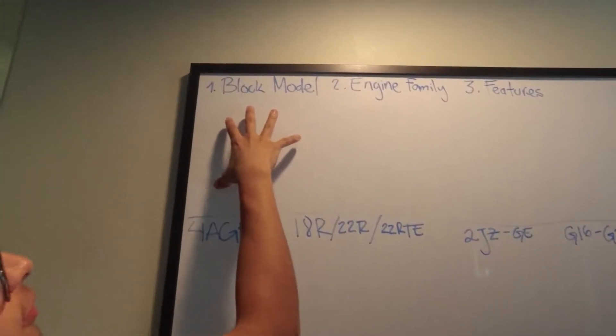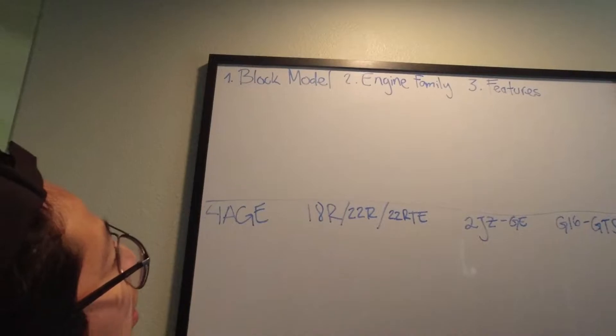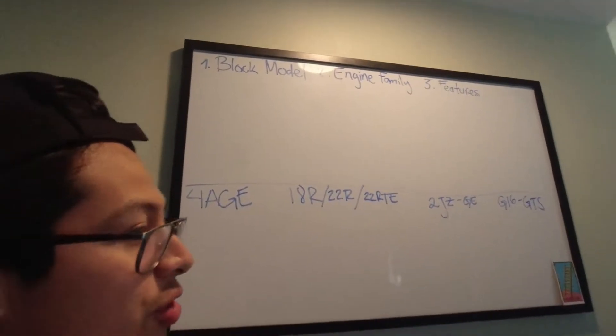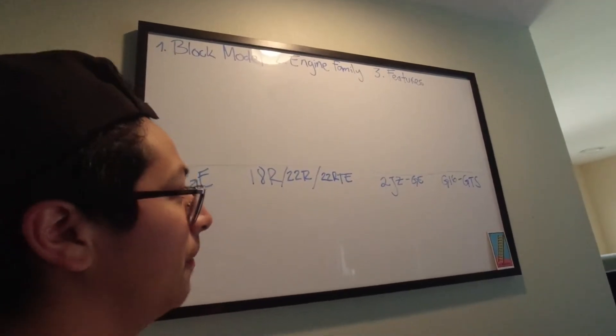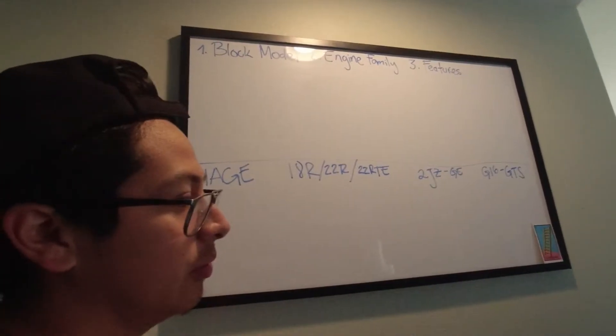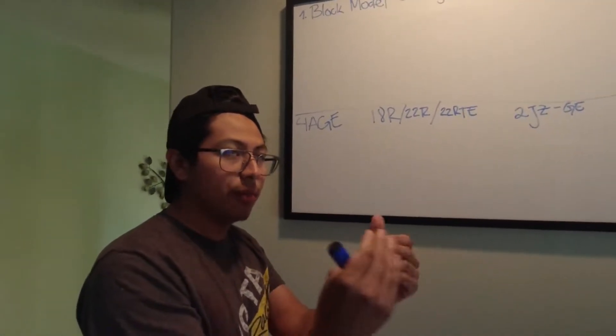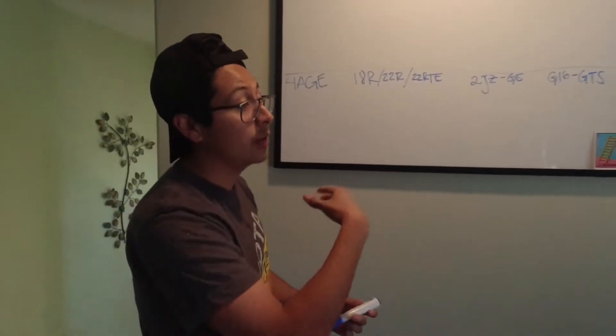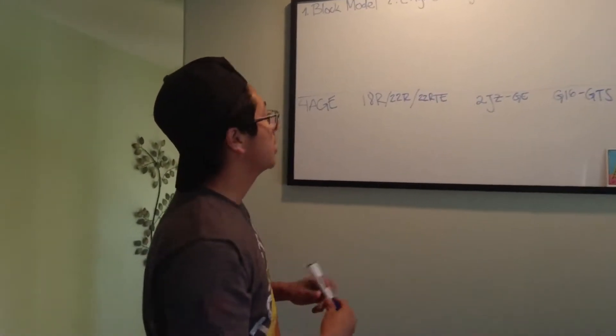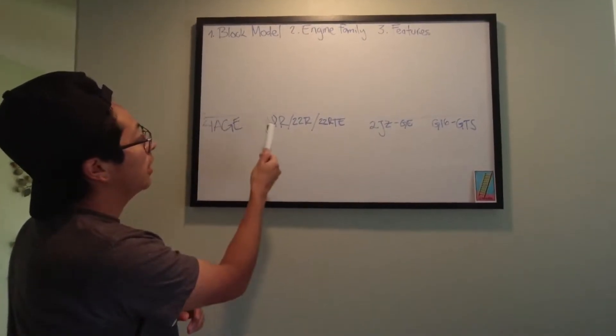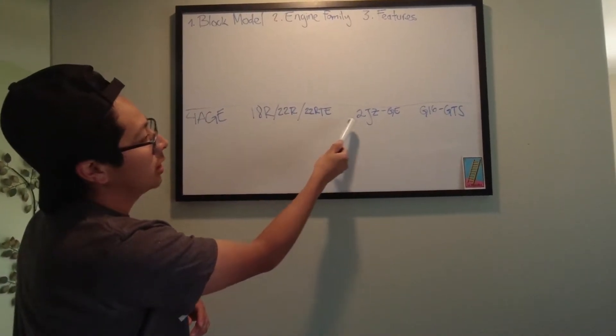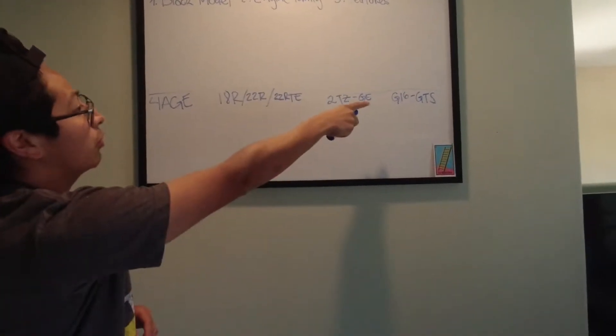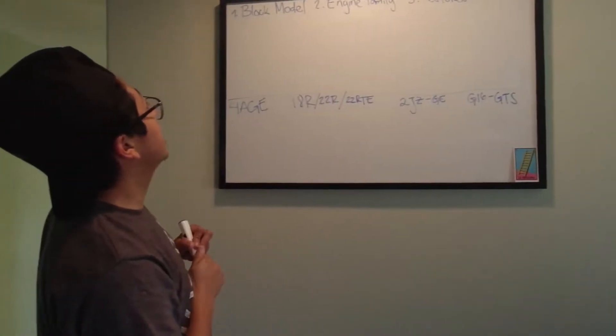So, let's talk about the first letter, the block model. The block model is usually a number. In a lot of the modern ones, it's not, but usually before the 2000s, everything was with numbers. So, for example, you can see a 4, an 18, a 22, a 2, things like that. That's a more newer one, right?